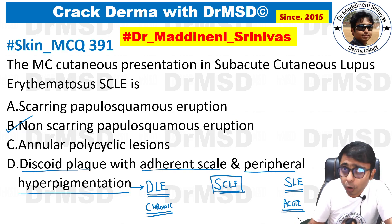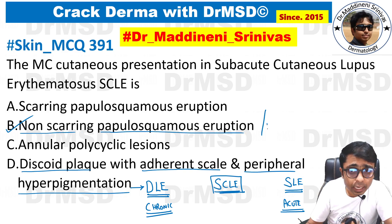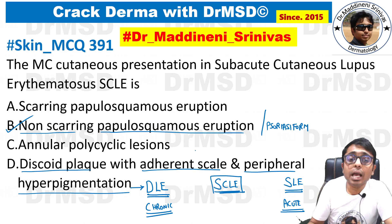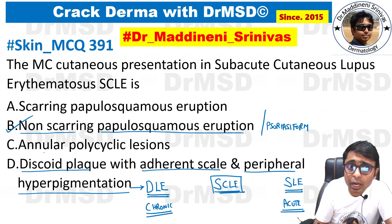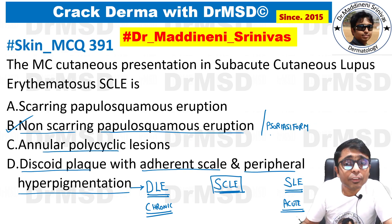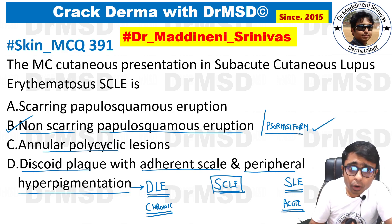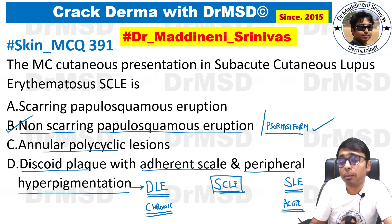Please remember: both option B and option C can be seen in SCLE — that is, non-scarring papulosquamous eruption (also called psoriasiform lesions) and annular polycyclic lesions. However, if you have to choose the most common one, always choose the psoriasiform or non-scarring papulosquamous eruption as the answer.